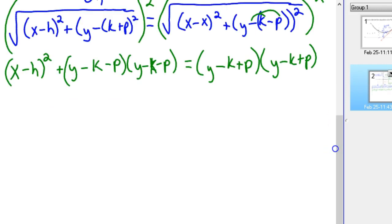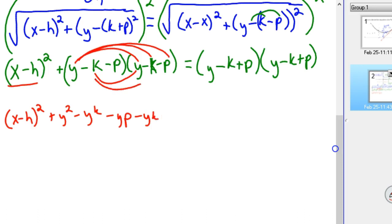Here we go. I'm just going to leave this piece alone, so that's just going to be X minus H squared, but I've got to distribute the Y minus K minus P. So Y squared, plus Y squared, minus YK, minus YP, and you want to be real careful that you don't mix this up, minus YK, plus K squared, plus KP, minus YP, plus PK, and then plus P squared.